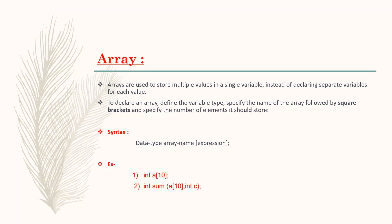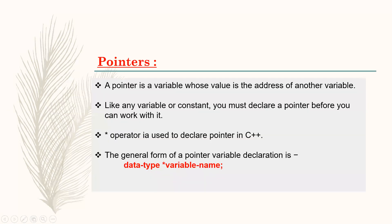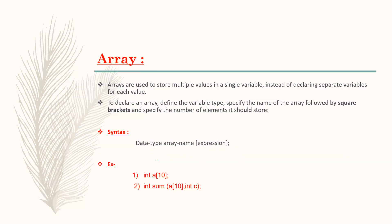To declare an array, define the variable type, specify the name of the array followed by square brackets, and specify the number of elements it should store. The syntax for an array is: data type, array name, and expression — meaning the number of elements stored in the array.